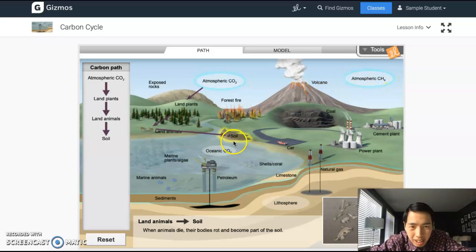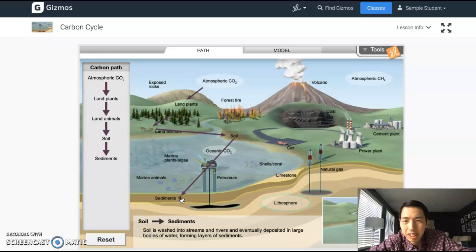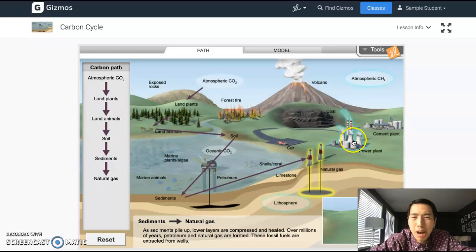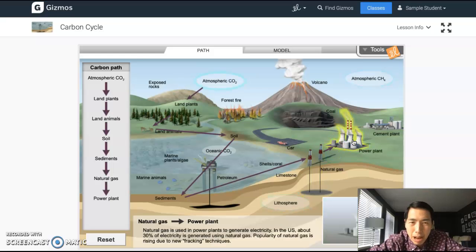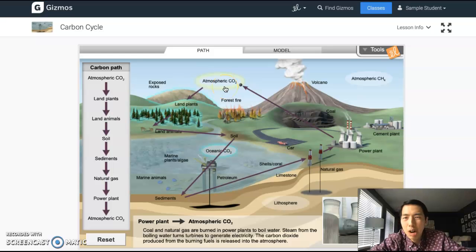Now it's flashing blue. I can click back to atmospheric CO2. Atmospheric CH4 is flashing—that's called methane. What else is flashing here? Oh, this long strip here called sediments is also flashing. I'm going to click on that, which leads to things like petroleum, natural gas. I'll click on natural gas, which leads to a power plant. And the power plant burns the natural gas to go back to atmospheric CO2.